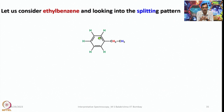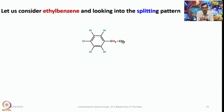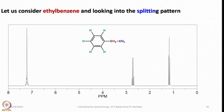The aromatic region shows three signals in a ratio of 1 to 2 to 2. On the other hand, the aliphatic part is similar to ethyl alcohol or chloroethane. The CH3 will appear as a triplet and the CH2 will appear as a quartet; overall it will be a multiplet.